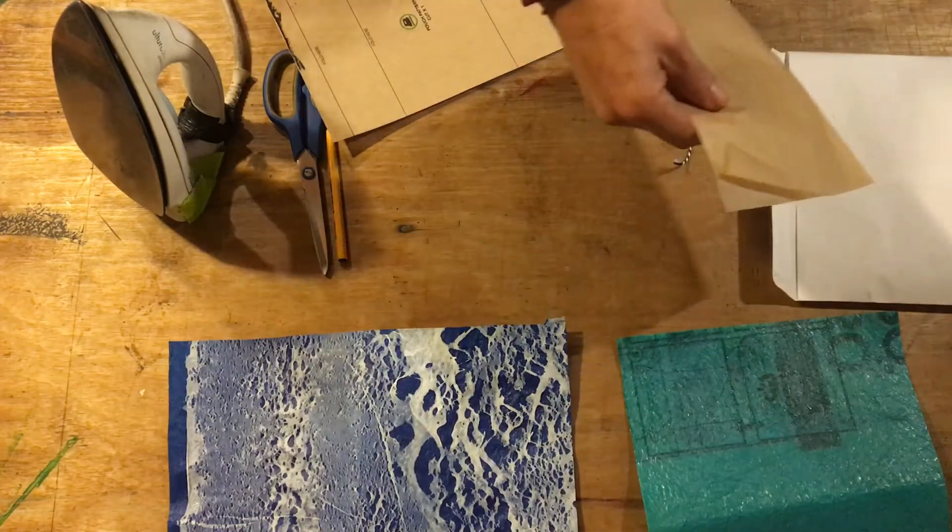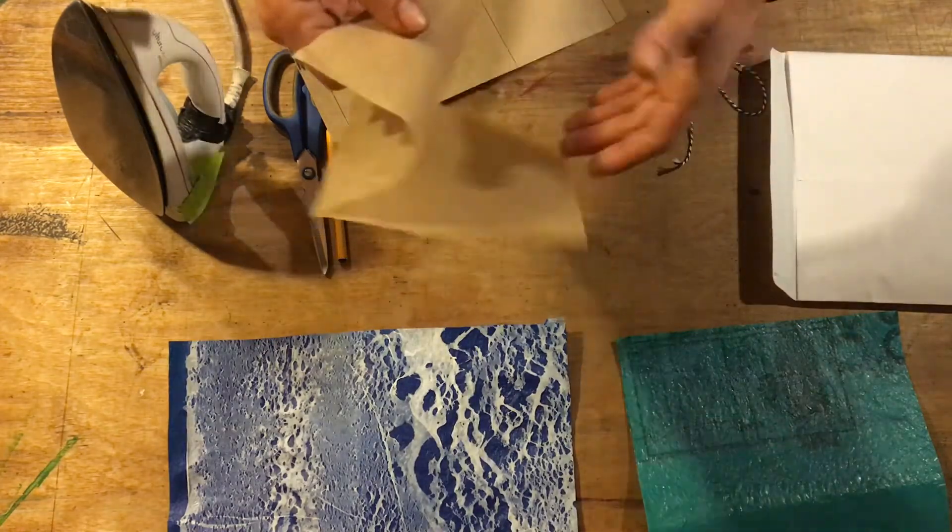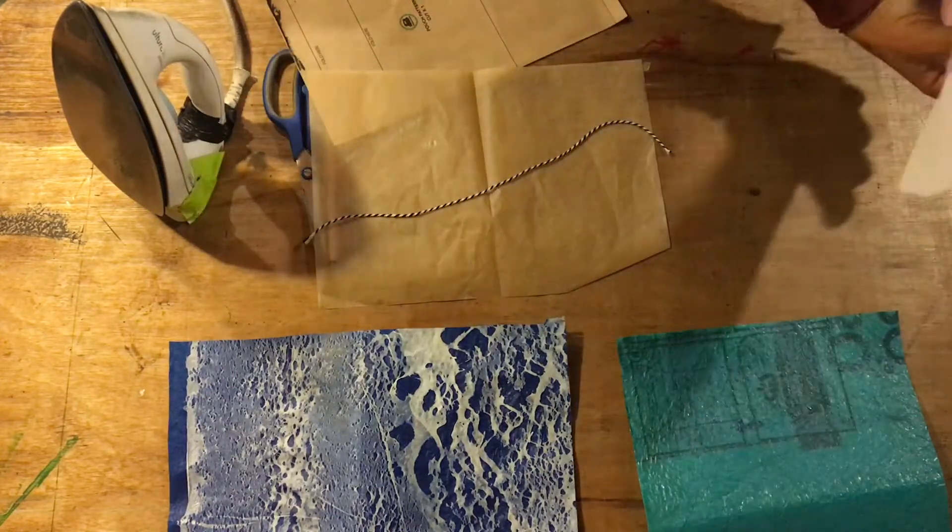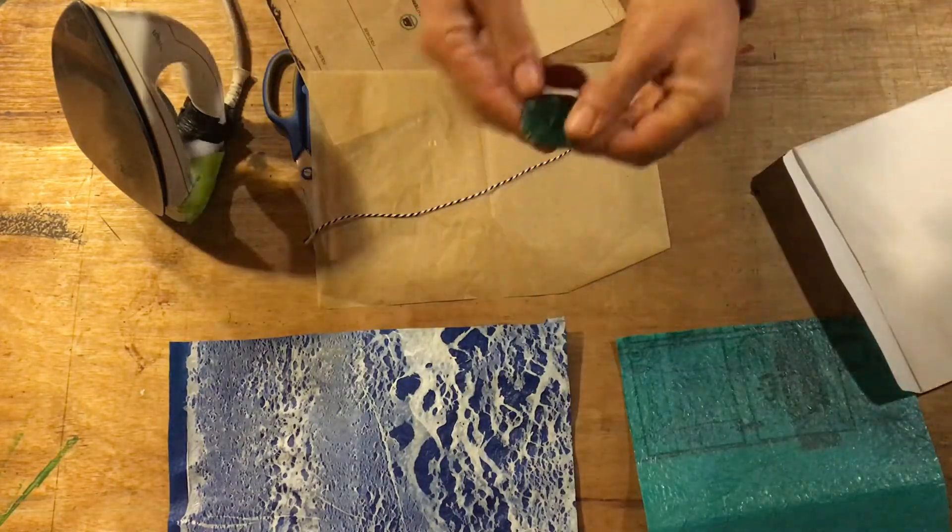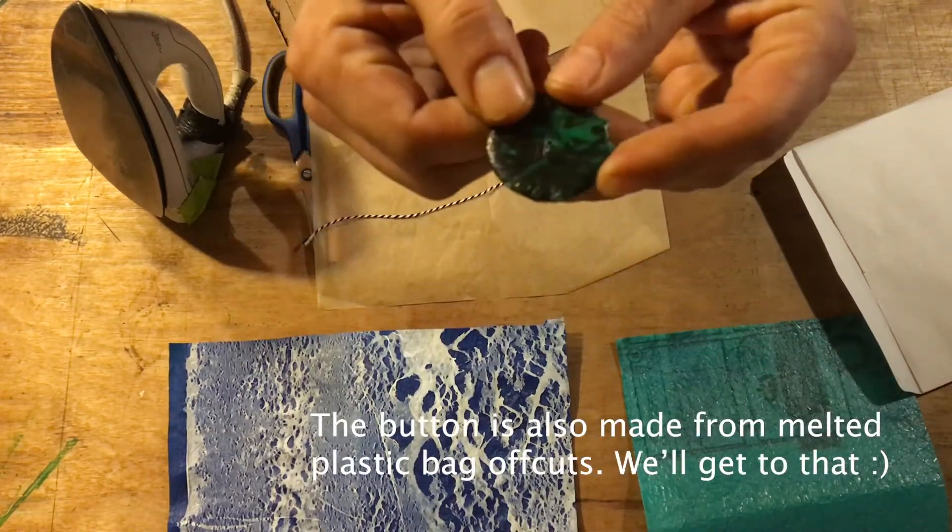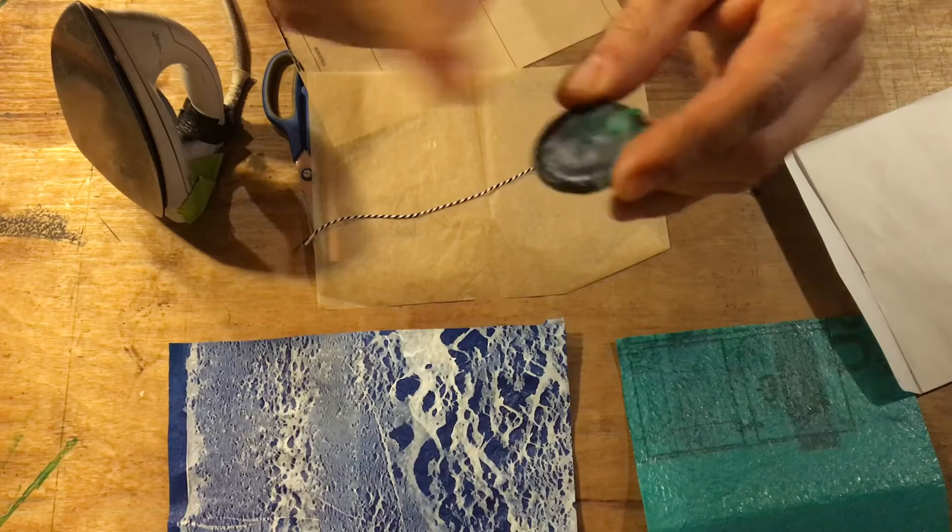You also get some baking paper, a little bit of string, and a little button like this that's got a little hole in the middle so you can use it to roll the string to close your pouch.